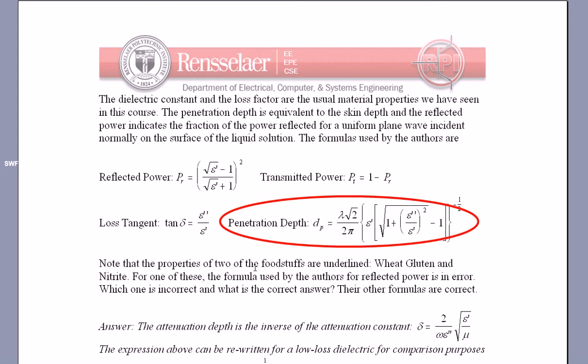But the properties of the two of the foodstuffs are underlined, and I've indicated here, which for one of these, and then the formulas are given, for one of these the formulas used by the authors for reflected power is in error. That means that the depth, the penetration depth ends up being the one that's incorrect.